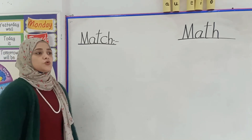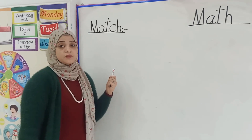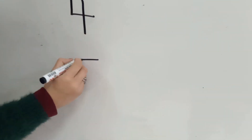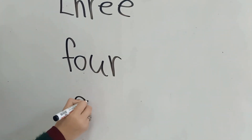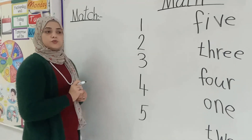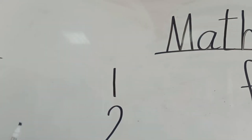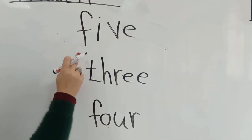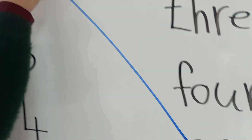Match. Here, KG1, in this exercise we are going to match number digits to numbers in words. Are you ready? Let's start: one, two, three, four, five. What is this number? Yes, number one. Where is the word 'one' here? Yes. Excellent. We will match with number one.